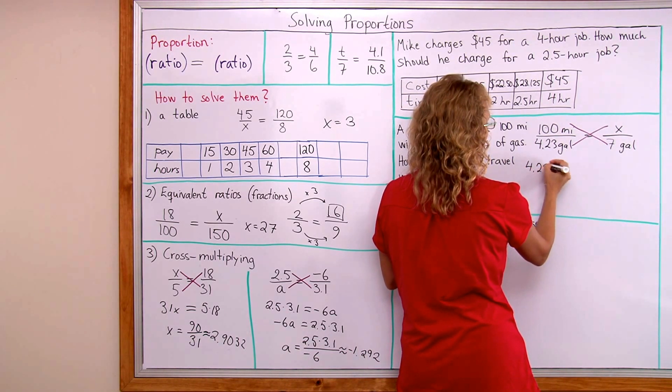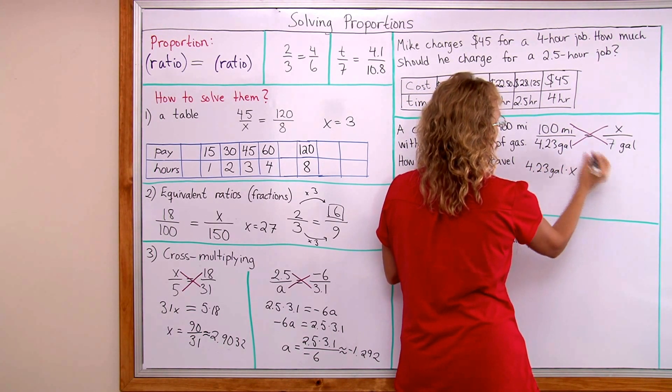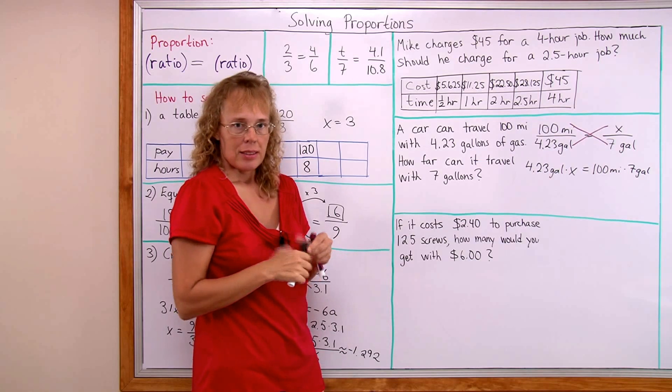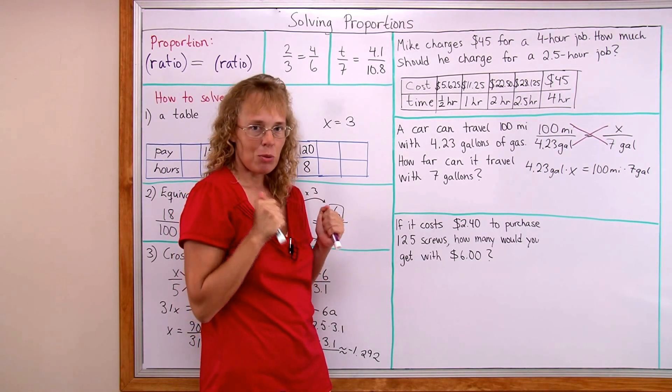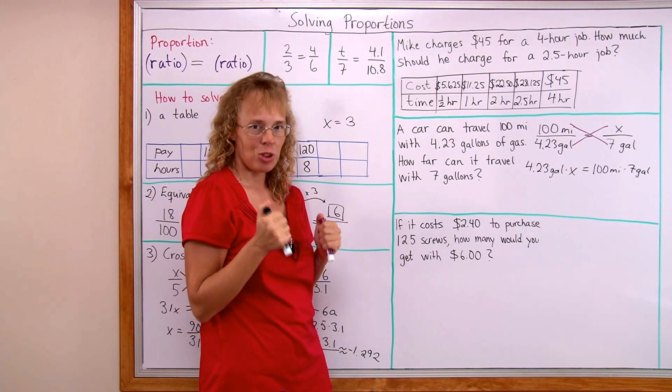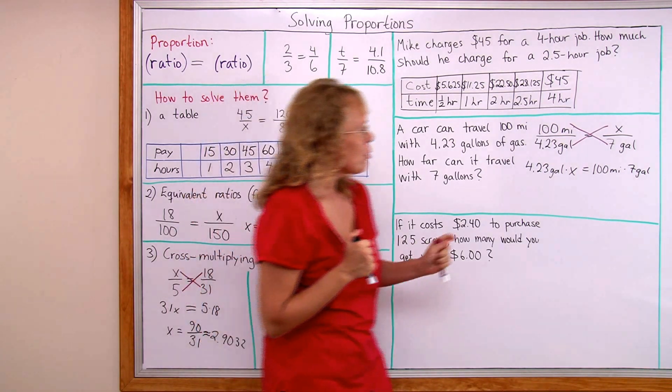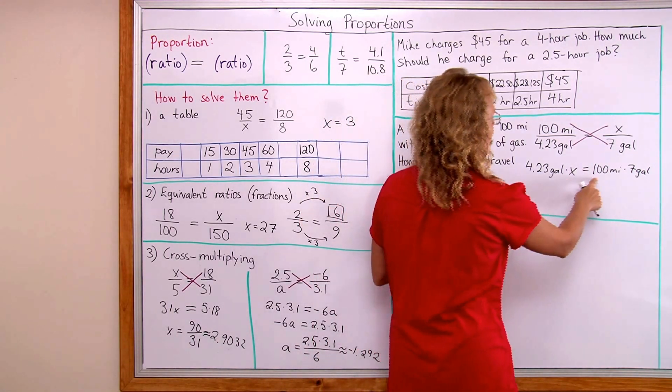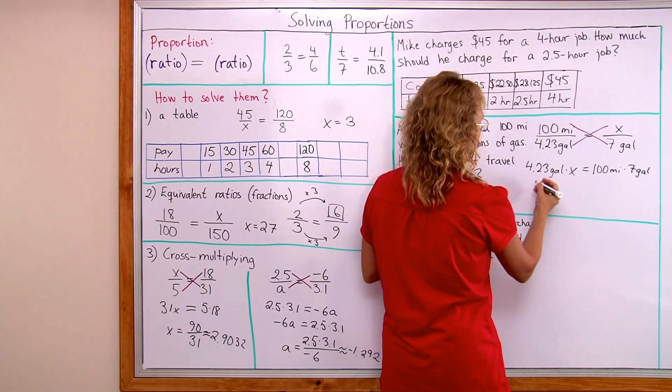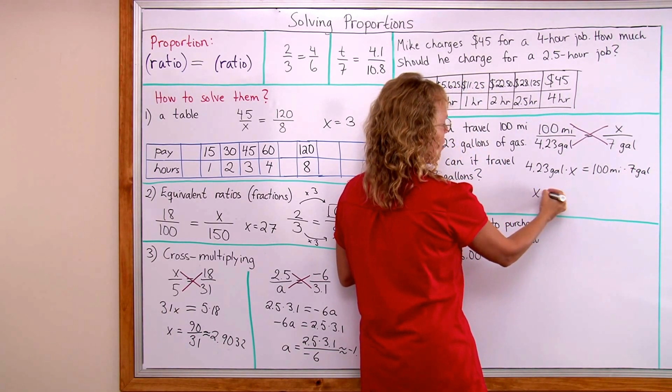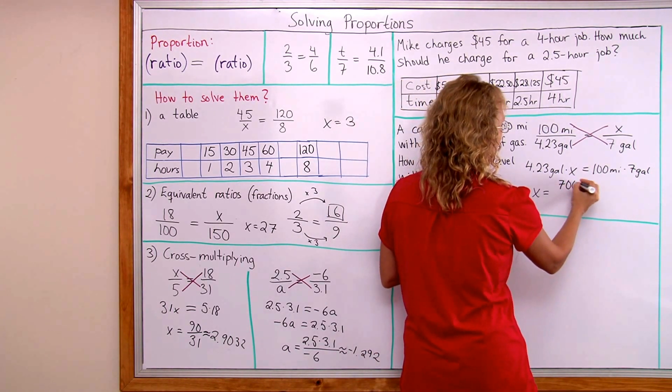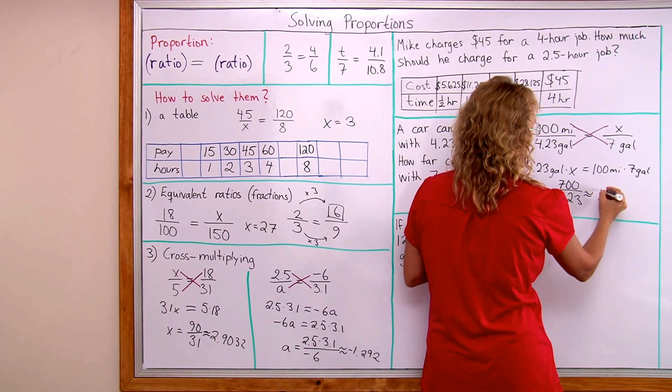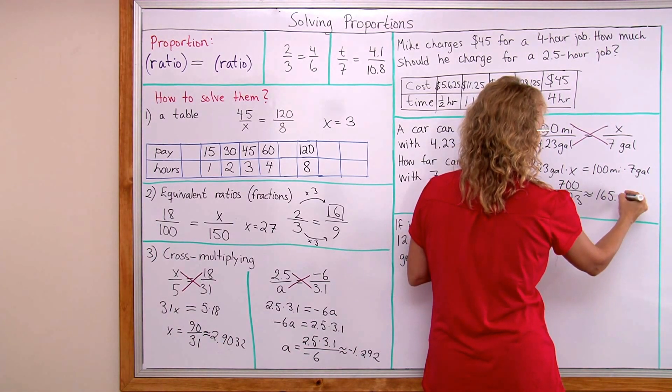So I will get four point two three gallons times x and on this side hundred miles times seven gallons. You can keep those units, gallons and miles there if you want to. Or you can drop them if you are sure what your answer will be. I am sure that my answer will be in miles. Okay? So I will just drop the gallons and miles from this calculation. Here I get 700 and here is four point two three. I need to divide both sides of the equation by four point two three. So it will be 700 divided by four point two three. Okay and the answer for this is 165.5 miles.